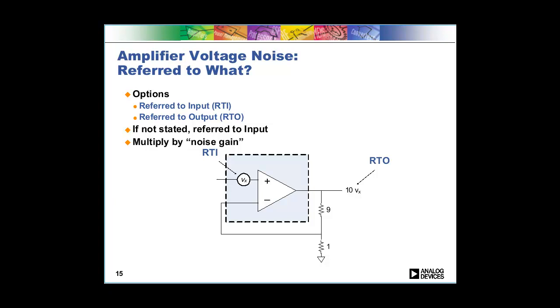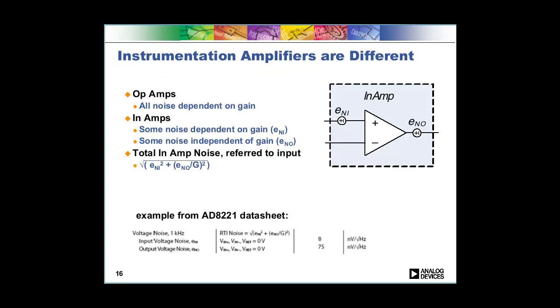In most data sheets, most amplifier data sheets, the noise is referred to the input. In fact, in op-amp data sheets, they may not even say, you may not even see this RTI or referred to input because it's just assumed that the noise is referred to input. It's just so common. In other amplifier data sheets, typically they'll say, and occasionally you may see something referred to output. An example might be a fixed-gain amplifier such as a difference amplifier. So when the gain is fixed, then you know that you can calculate what the RTO is versus the RTI.